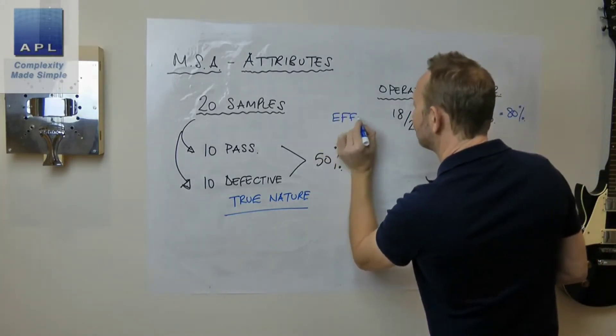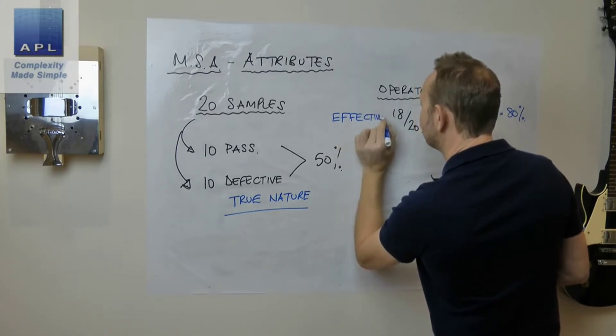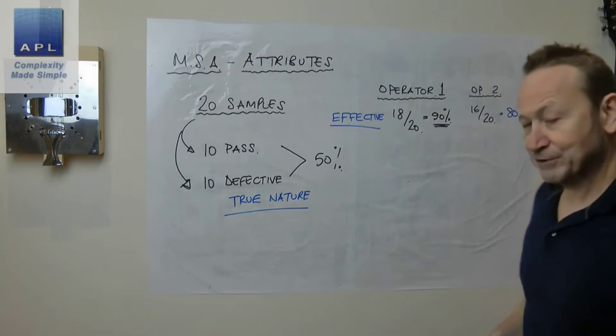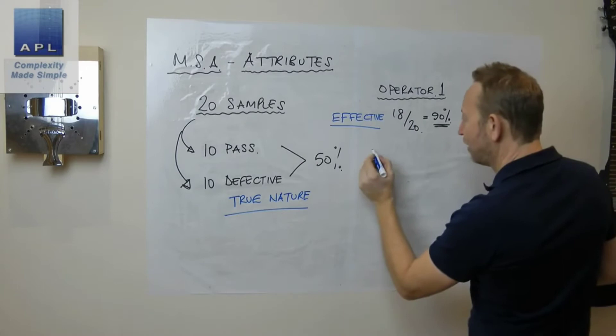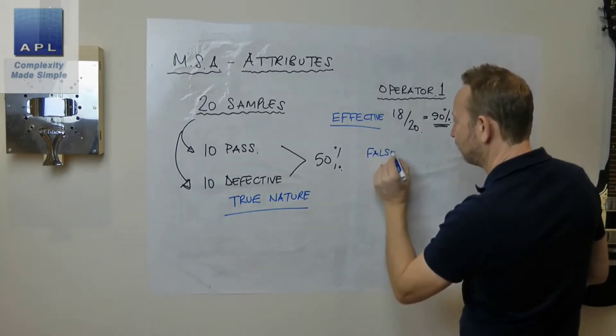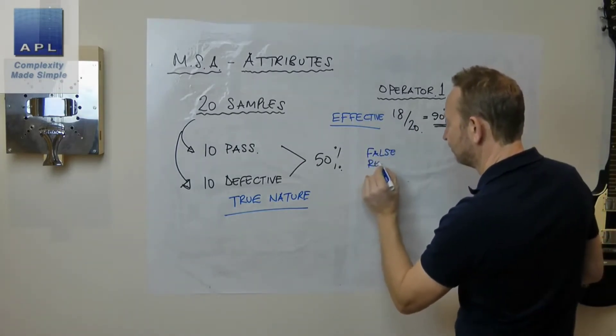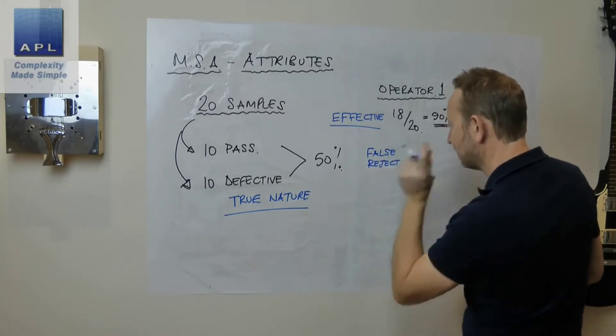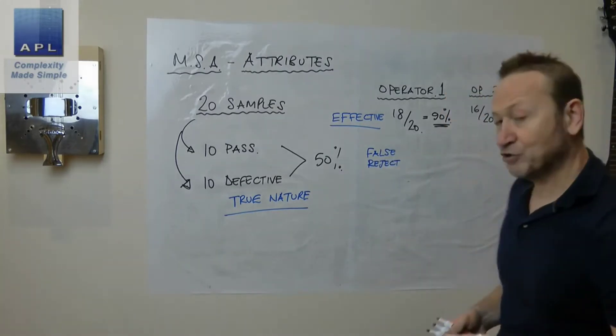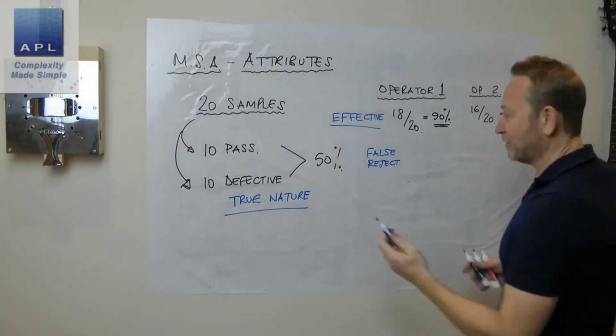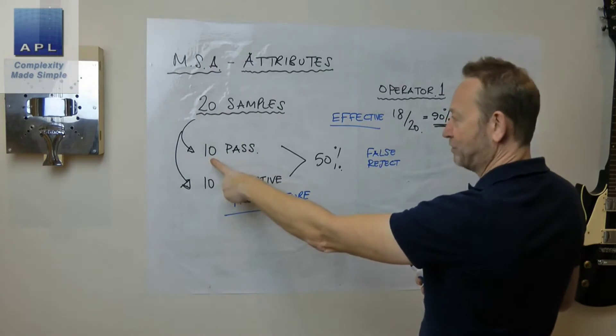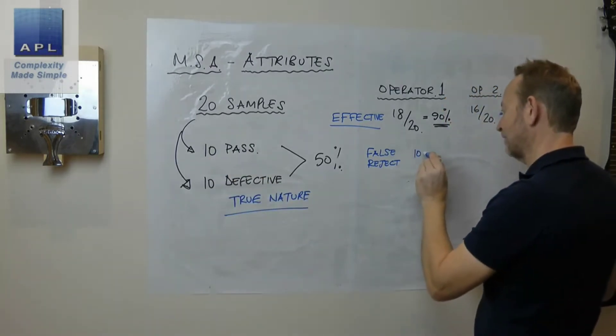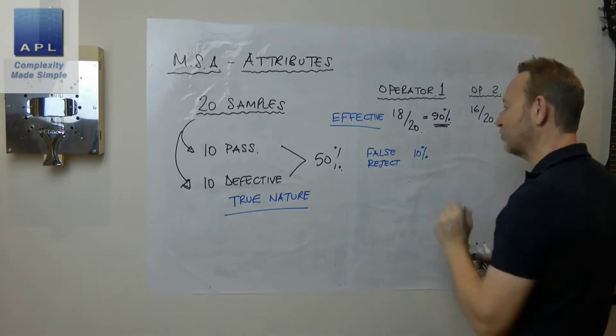Then the next thing you're going to work out is the chance of a false reject. What's the chance you're going to get a false reject? That's going to be defined effectively by the percentage of mistakes that you've made here. So if you've made 1 in 10 mistake here, then there's a 10% chance of a false reject.